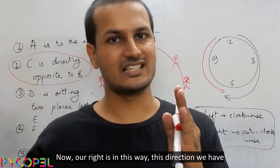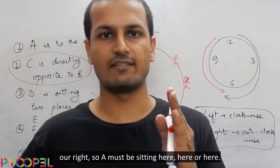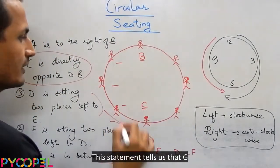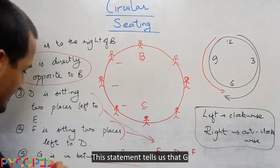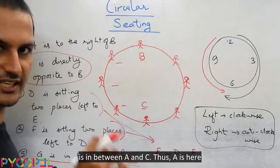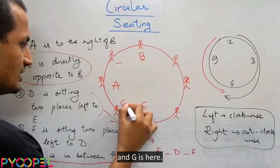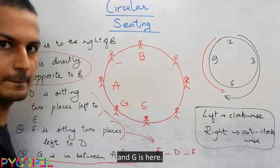Now, our right is in this way. This direction we have our right. So A must be sitting here, here or here. This statement tells us that G is in between A and C. Thus A is here and G is here.